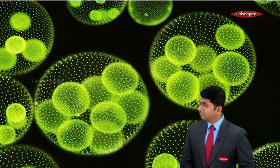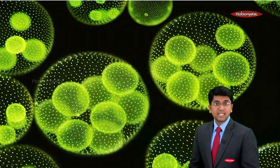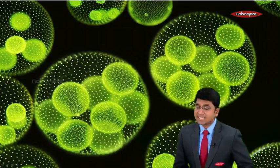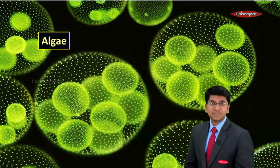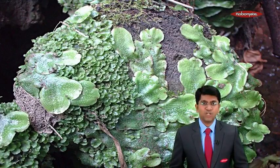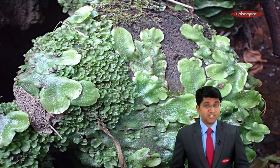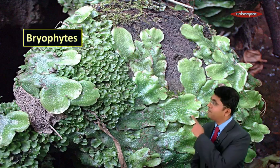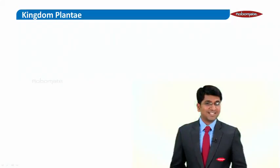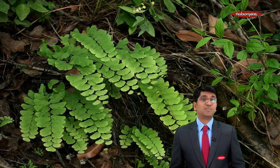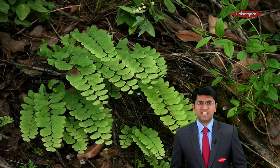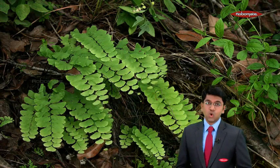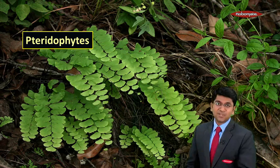The first picture shows wall walks, which are included in a category known as algae. Next, you can see some leaf-like structures, which are included in a category known as bryophytes. You must be aware of ferns, seen in jungles or forests — they are included in a category known as pteridophytes.